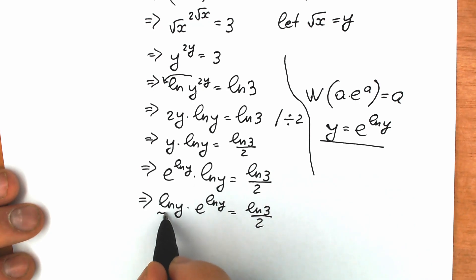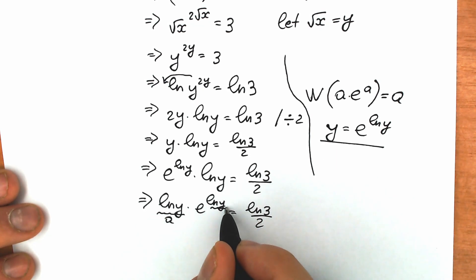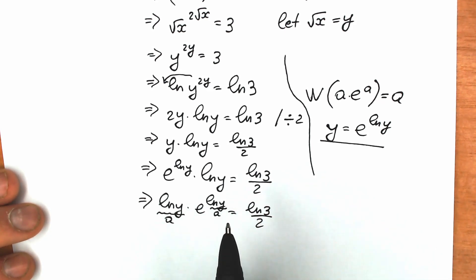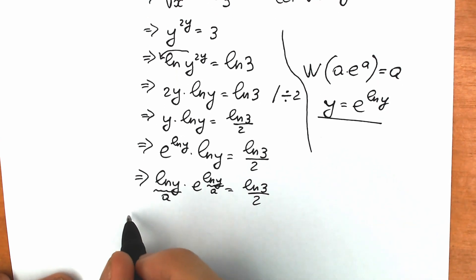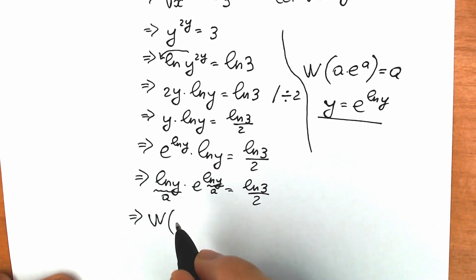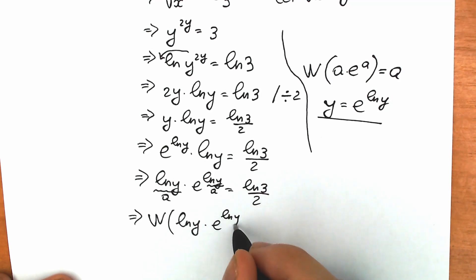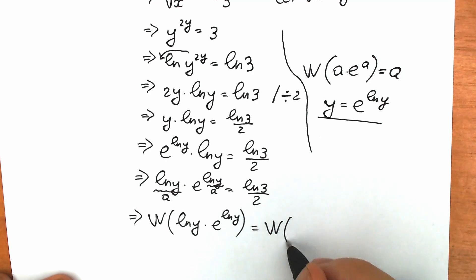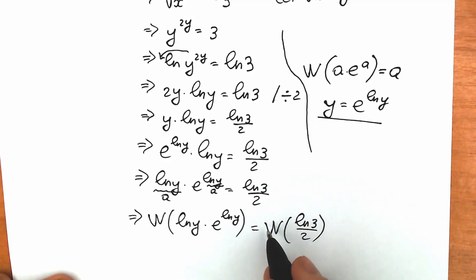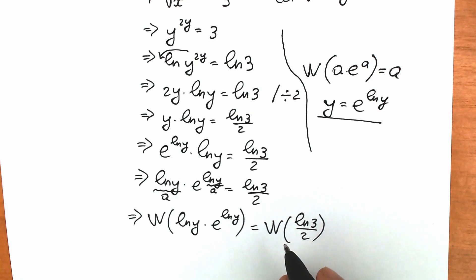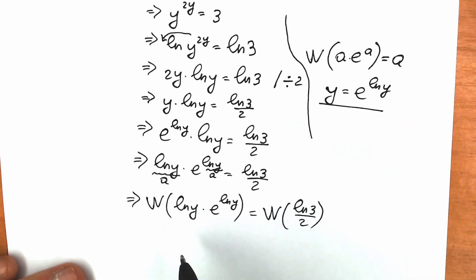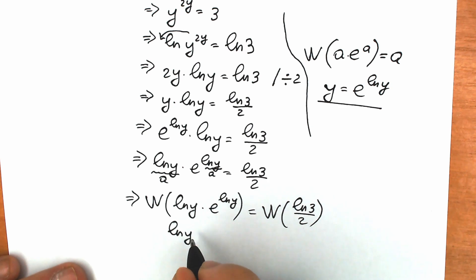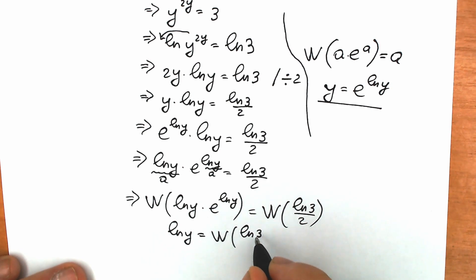Now let's look closely at the left side. Let's keep in mind that natural log y is our a — this is also our a because we have the same thing. So we have a times e to the power a: exactly the case we need right now. So we are going to apply the Lambert W function. On the left side, Lambert W of a times e to the power a equals a, so in our case a equals natural log y. Therefore natural log y equals Lambert W of natural log 3 over 2.